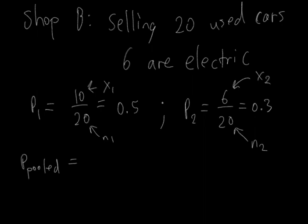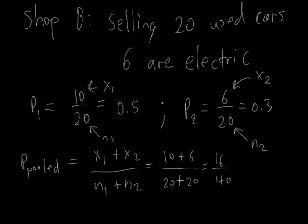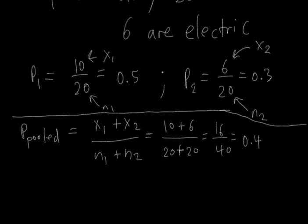The P pooled, or the pooled proportion, is given by x1 plus x2 divided by n1 plus n2, which is equal to 10 plus 6 divided by 20 plus 20, which is equal to 16 over 40. As a proportion, this number comes out to 0.4. So we have the pooled proportion, which is 0.4.